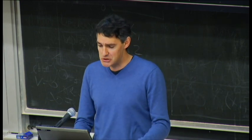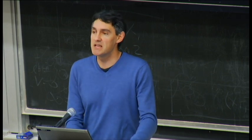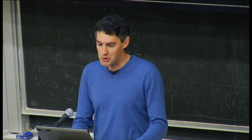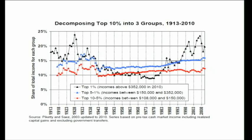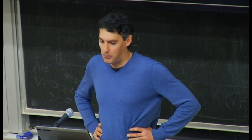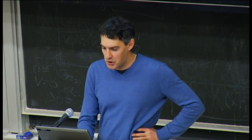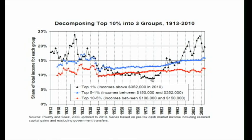The second striking fact is how concentrated the change has been within that top 10 percent. In the second chart, the top 1 percent is shown in black, the next 4 percent in blue, and the next 5 percent in red. Over 80 percent of the increase in the top 10 percent share comes from a dramatic rise in the top 1 percent income share — from less than 10 percent in the late 1970s to about 20 percent today.